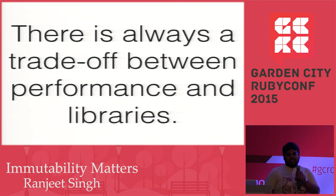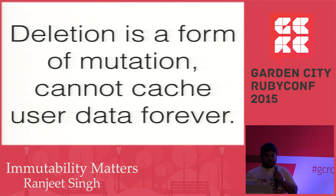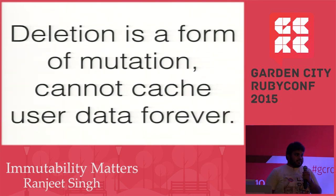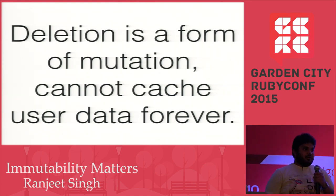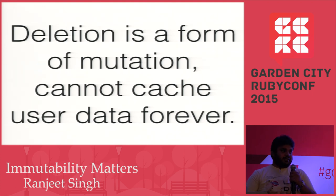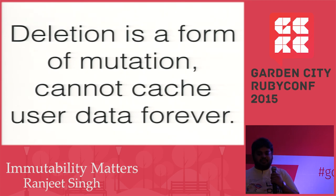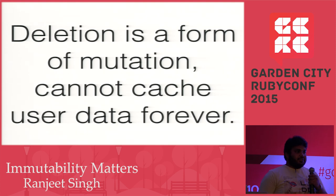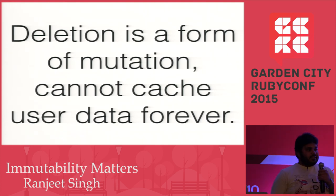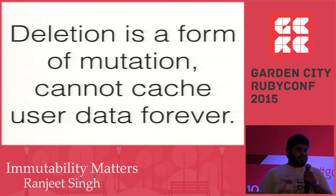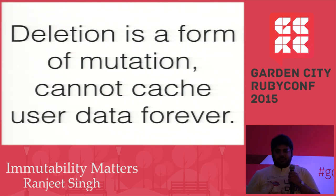Deletion is necessary because of caching. With immutable data, you keep caching objects in memory and keep creating records in the database, and sometimes you want to delete history. The same thing happens with git — sometimes we need to delete commits, branch out, or delete another branch.